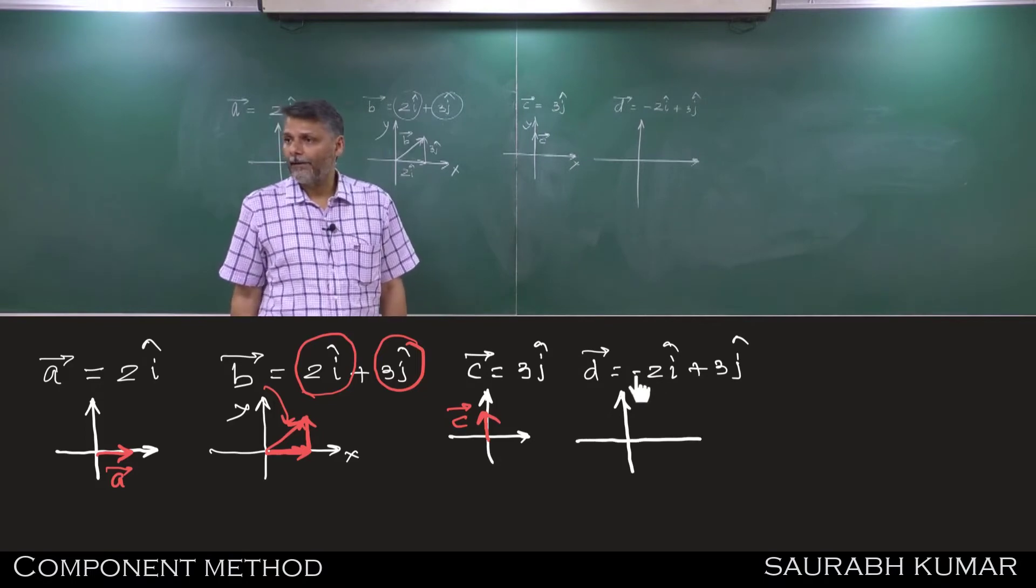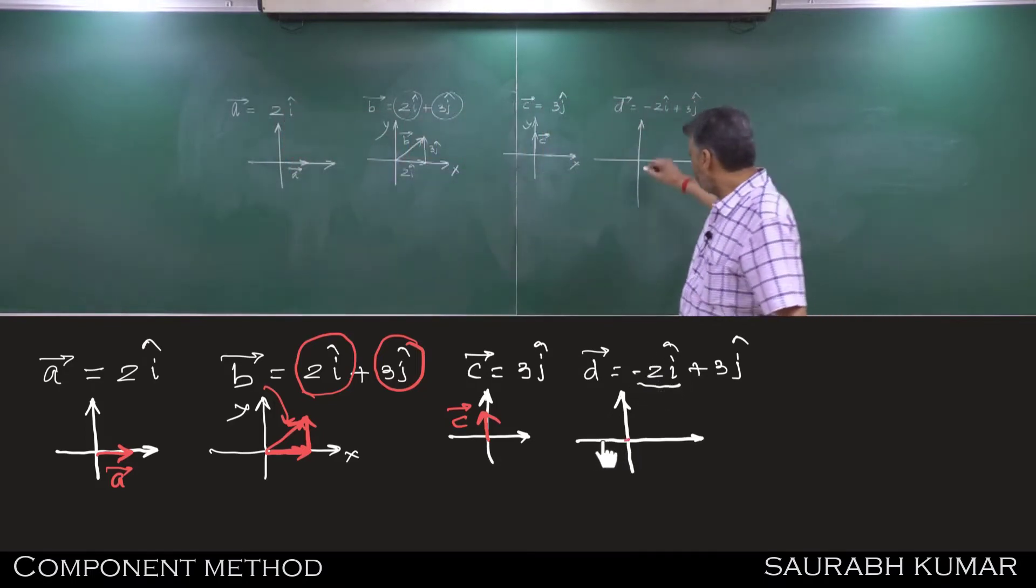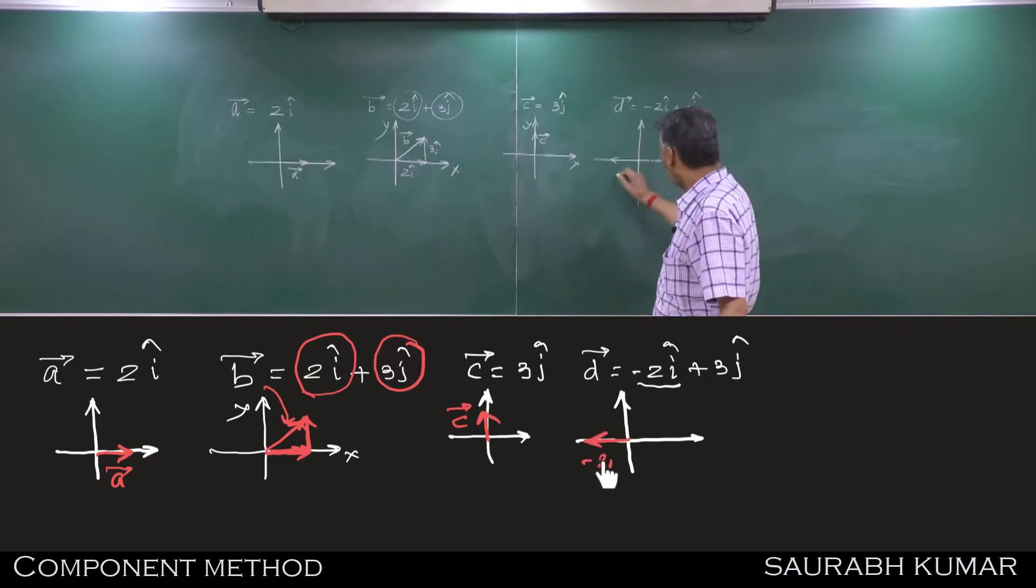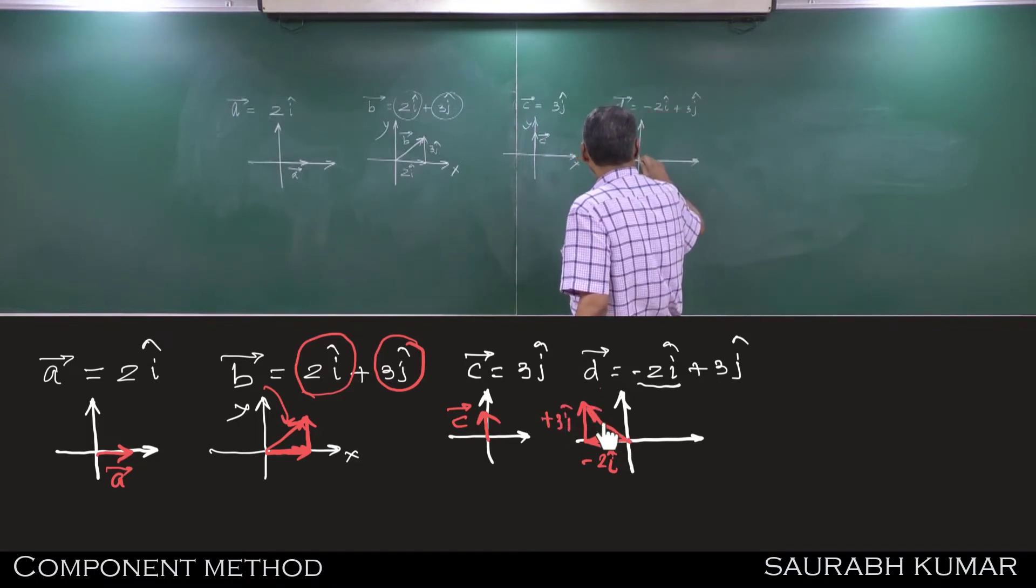What is the first vector? Minus 2i cap. Which way will you show? Negative x axis. Very good. And then next vector is plus 3j cap. That's it. So this is vector D.